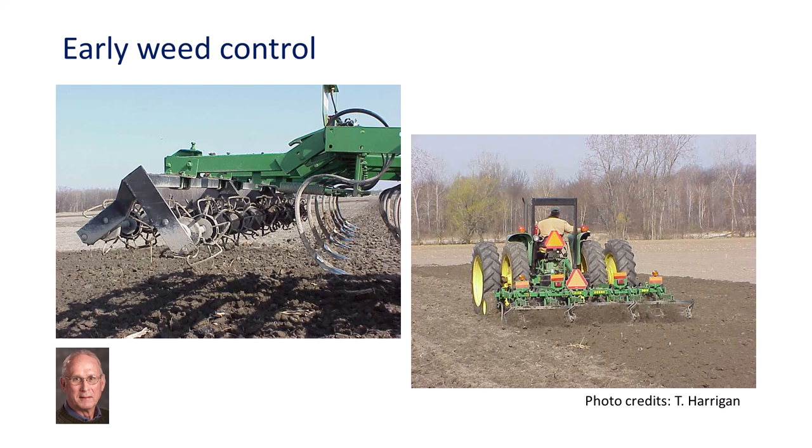This field cultivator with S-tine shanks, followed by two rows of rolling baskets, provides full-width weed control, loosens and levels the soil, and provides early season weed control before planting a sugar beet crop. Intensively tilled soil such as this is subject to soil degradation and compaction from raindrop impact before and after planting. Additional tillage after rainfall may be needed to break up a crusted soil surface.